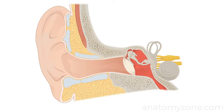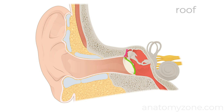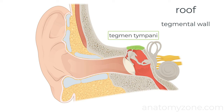I've switched back to the diagram because the tympanic membrane has been removed in the 3D model in order to look into the middle ear cleft. The lateral or membranous wall is formed mainly by the tympanic membrane. The superior aspect is formed by the bony wall of the epitympanic recess. The roof, or the tegmental wall, is formed by a thin layer of bone known as the tegmen tympani, which separates the middle ear from the middle cranial fossa.